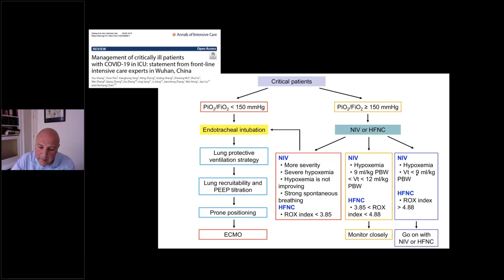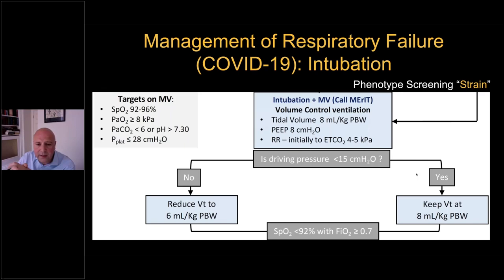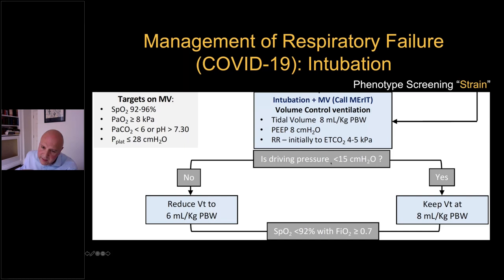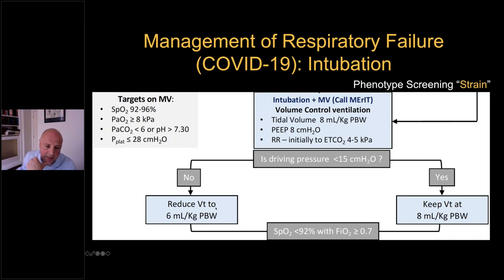Their management approach shows a severity dichotomous variable: if PF ratio is less than 150, they proceed to intubation. If it's more than 150, they do a trial of non-invasive ventilation or high flow, looking at spontaneous breathing, hypoxemia, and tidal volume. Only in the case where everything is improving — particularly work of breathing and low tidal volume indicating low effort — do they continue with non-invasive or high flow. When intubation happens and mechanical ventilation begins, we start with volume control ventilation, initially with not super low tidal volume — eight ml/kg — modest PEEP around 8. Then we measure the driving pressure.